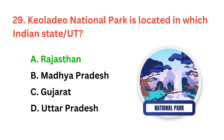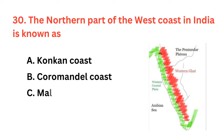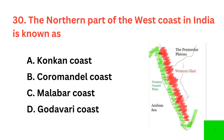The northern part of the west coast in India is known as? The correct answer is option A: Konkan coast. The highest mountain peak in peninsular India is?